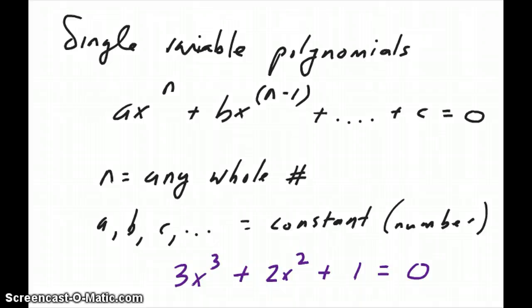So n can be any whole number, 1, 2, 3, 4, and so on. a, b, c are just numbers which in math are normally called constants. And so an example of a single variable polynomial will be the one that's written at the very bottom there in purple which is 3x cubed plus 2x squared plus 1 is equal to zero.